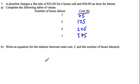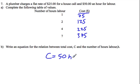So the equation relating cost to the number of hours is C equals 50 times H plus $25. In other words, to calculate the cost of the plumber, you multiply the number of hours by 50 and add 25.